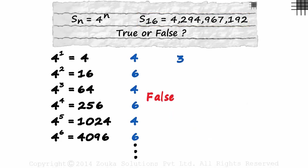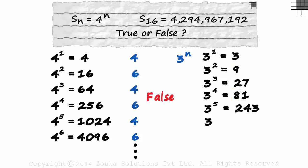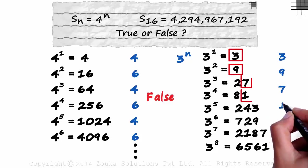What about the sequence 3 raised to n? Does it also have a cyclical pattern in its units digits? The first four terms are 3, 9, 27 and 81. And these are the next four terms. Do you see a pattern? Yes, a pattern of 3, 9, 7, 1.